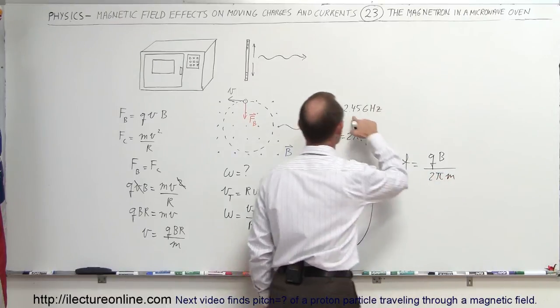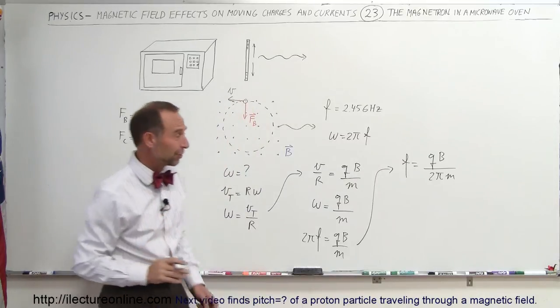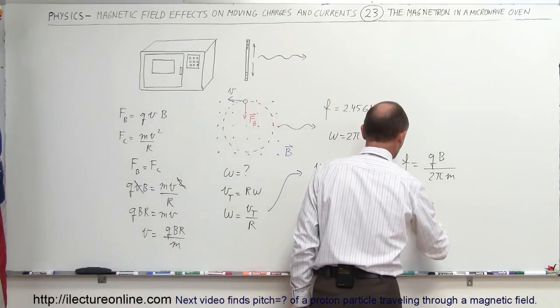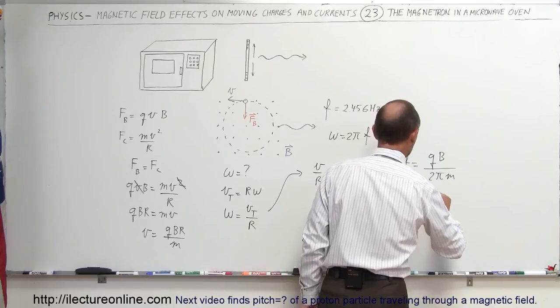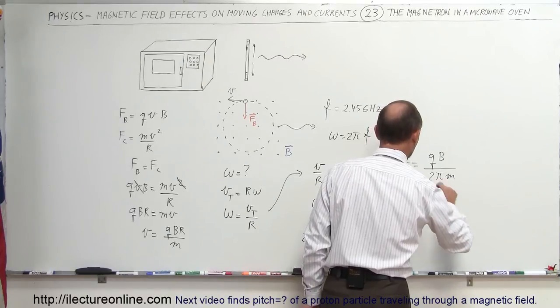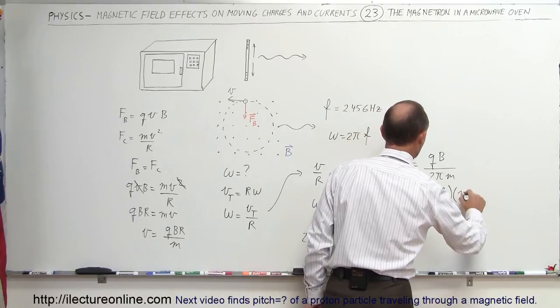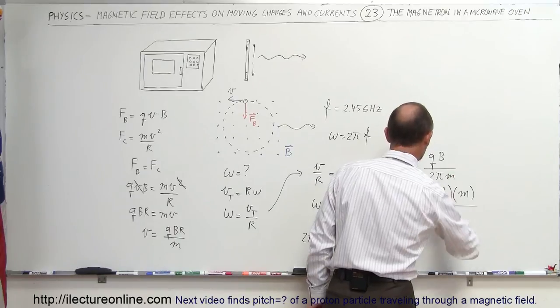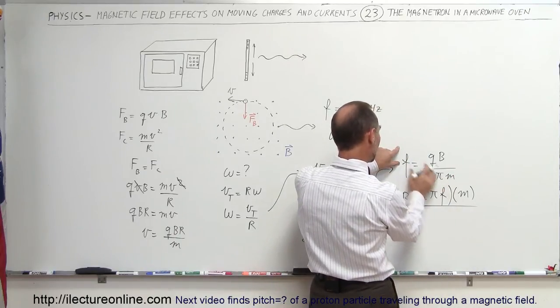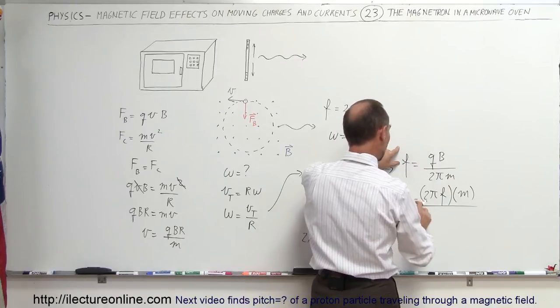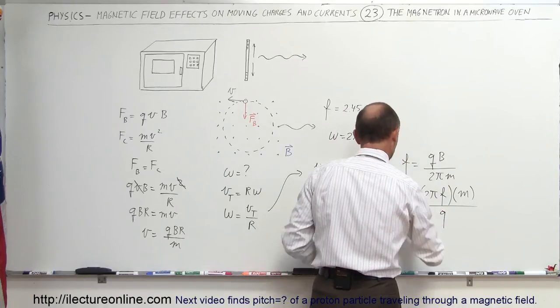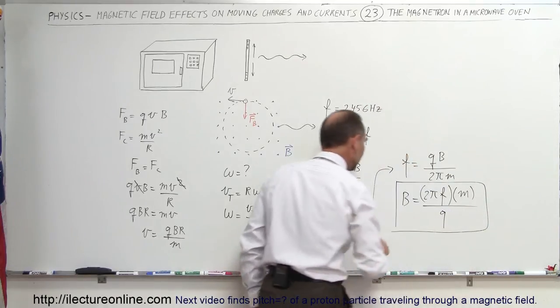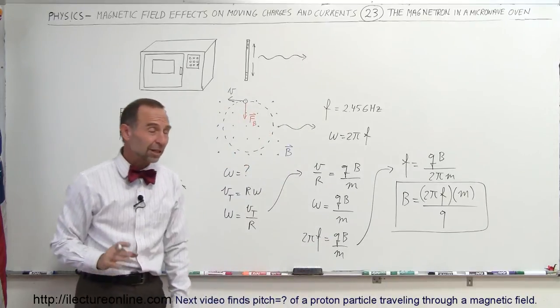We know the frequency has to be 2.45 GHz, or if we solve that equation for the magnetic field, which is the factor that we don't know, magnetic field is equal to 2 pi times the frequency times M divided by, let's see here, we have F, 2 pi F times M, and we want B divided by Q.